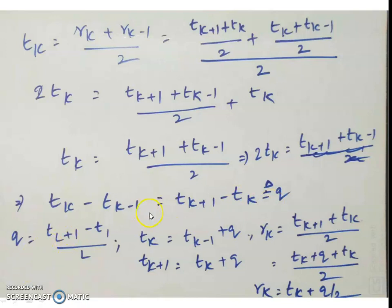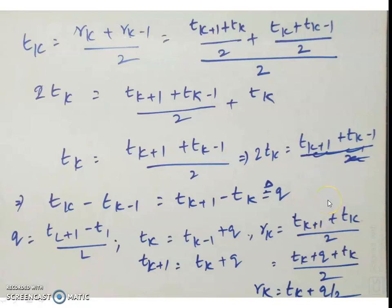The quantization step q is defined as the difference between any two consecutive transition levels. Since we have l such intervals spanning the total range tl+1 − t1, we get lq = tl+1 − t1, so q = (tl+1 − t1) / l.